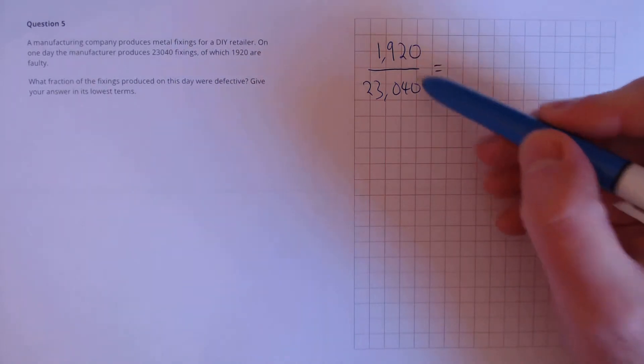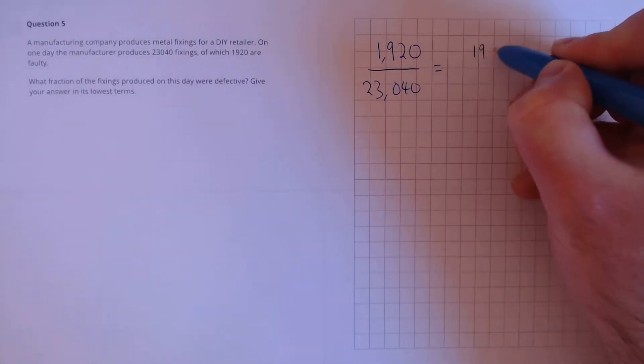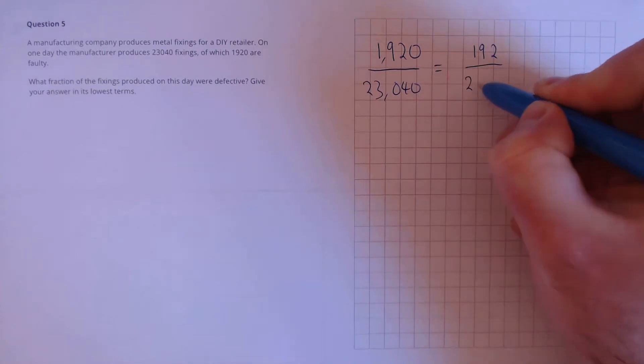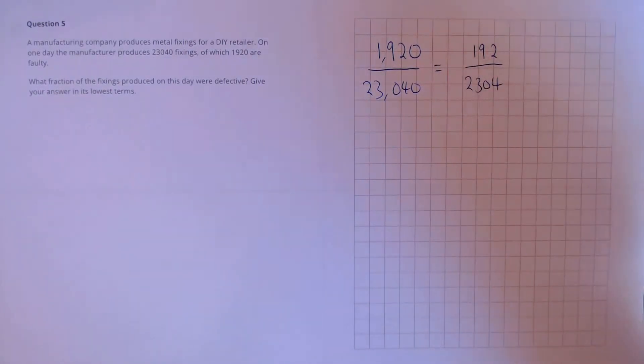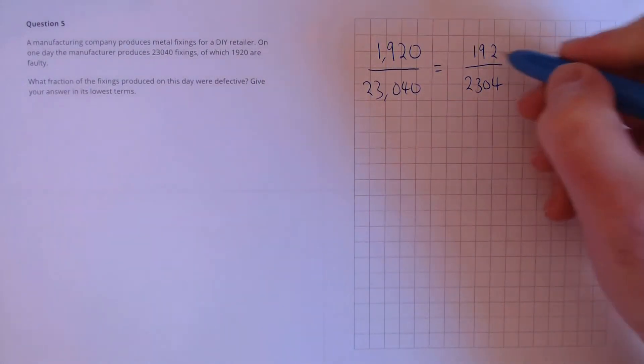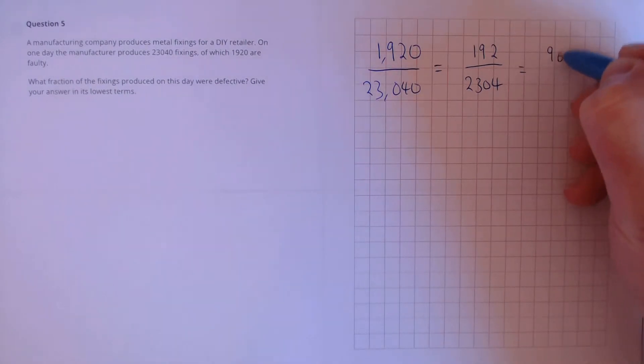I noticed that both of these divide by 10, so I can divide the top by 10 and the bottom by 10. Next, let's do some more cancelling. We can divide both by 2 to get 96 over 1,152.